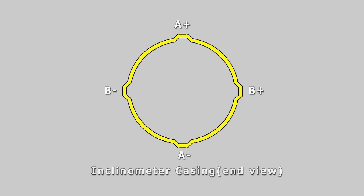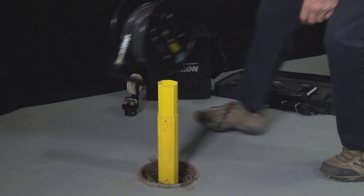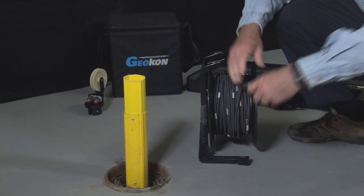The inclinometer casing installed in a borehole has four grooves that are designed to orient the probe assembly. The reference directions are indicated as A+, A-, B+, and B-. Before conducting a survey, the system must be assembled and powered up.